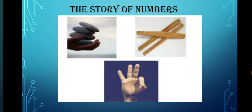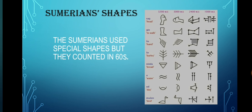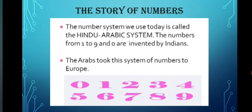Let's discuss about the story of numbers. In early times, people used pebbles and sticks to count, then they started counting numbers with their fingers. In different parts of the world, various ways of writing numbers soon developed. The Sumerians used special shapes but counted in 60s. The number system we use today is called the Hindu-Arabic system. The numbers from 1 to 9 and 0 were invented by Indians. The idea of zero, or Shunya, was first developed by the ancient Indian mathematician Aryabhata. Arab traders carried the Indian system of numbers to other countries. The Europeans learned this number system from the Arabs and started calling them Arabic numerals.